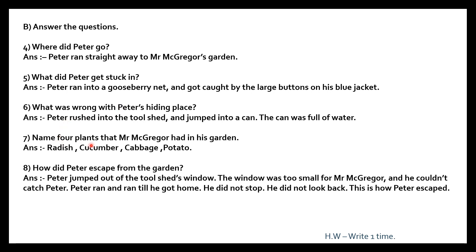Let's write four plants that Mr. McGregor had in his garden. You can write any four plants — for example: lettuce, French beans, radish, parsley, cucumber, cabbage, potato. I chose radish, cucumber, cabbage, and potato as they are easier to remember. If you want, you can choose other plants like French beans or parsley — any four plants.